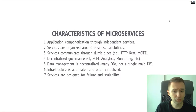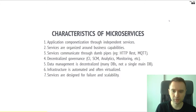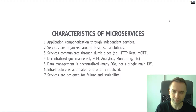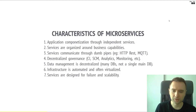Let's go through a few characteristics of microservices. There's application componentization to independent services. Just as in any large-scale program you have components or modules, in microservice architecture those components are typically services which communicate via network calls. Services are organized around business capabilities — pricing, booking service, think of those. Services communicate through dump pipes: HTTP REST, MQTT, gRPC — simple, standard, cross-platform.